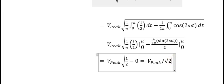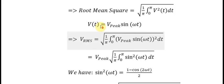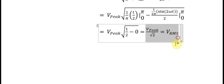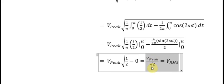We get V peak divided by the square root of 2, and this is the answer. So Vrms equals V peak divided by the square root of 2. That is why we have the square root of 2 in the formula. That is the end. Thank you for watching.